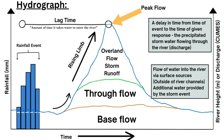The base flow is the consistent amount of water flowing in from groundwater sources; the through flow is the additional water from subsurface soil and rock flowing into the river channel. Then we have the final overland flow — the surface runoff or storm runoff — the additional water from the storm or rainfall event on top of both base flow and through flow, causing the river to peak at a higher discharge and height. Anything above the base flow — including through flow, overland flow, and storm runoff — constitutes the rising limb, as the river rises because of the extra water and additional discharge flowing through the channel.